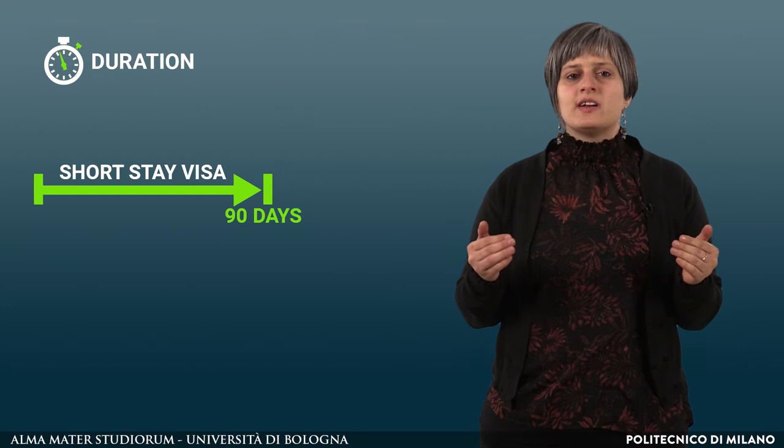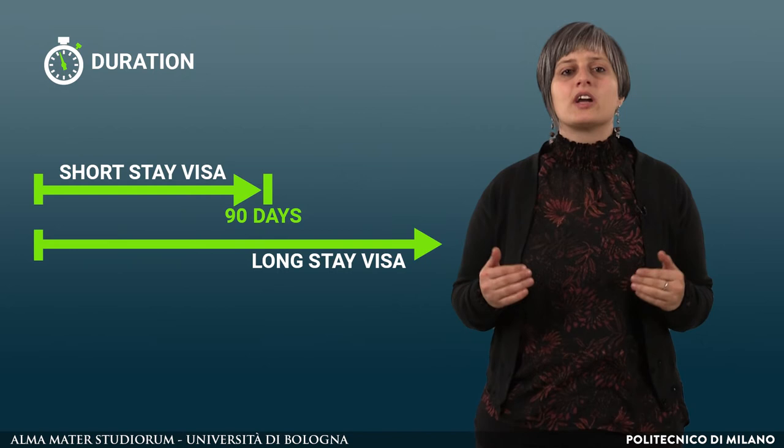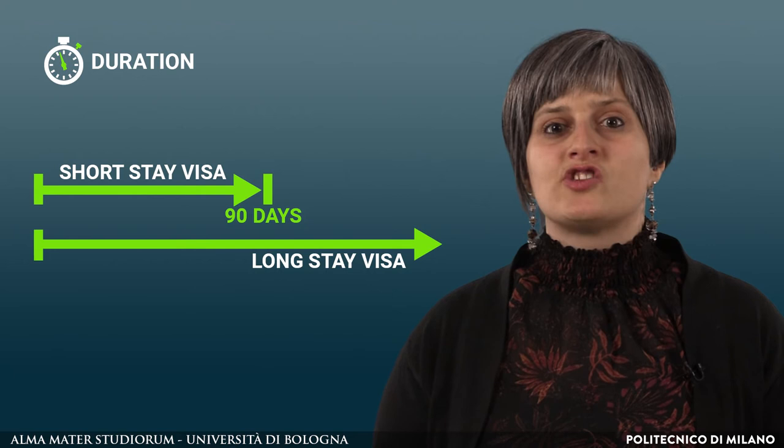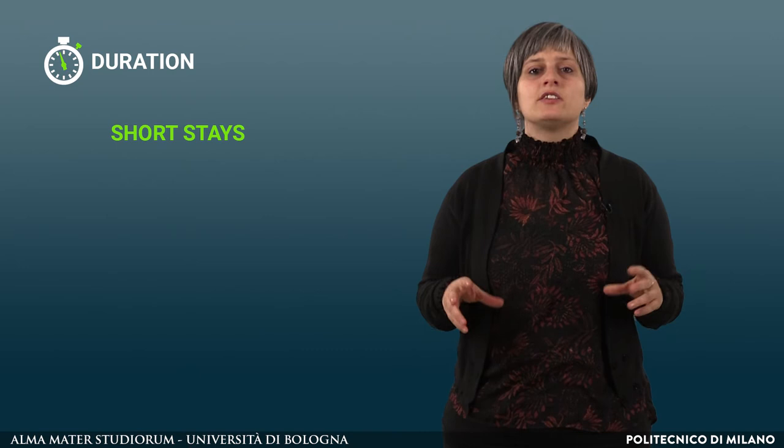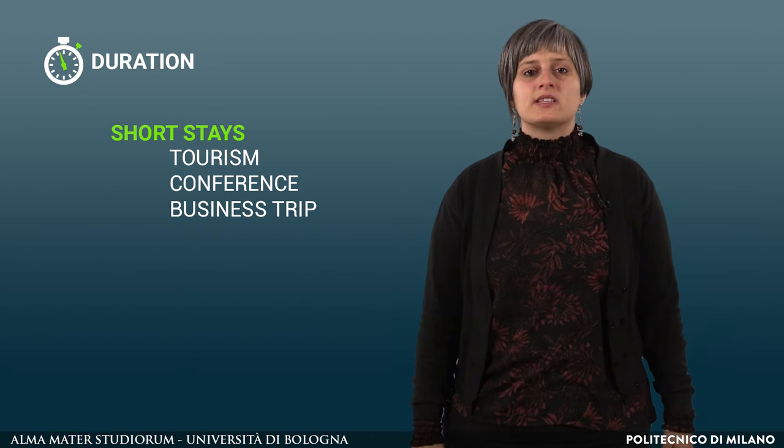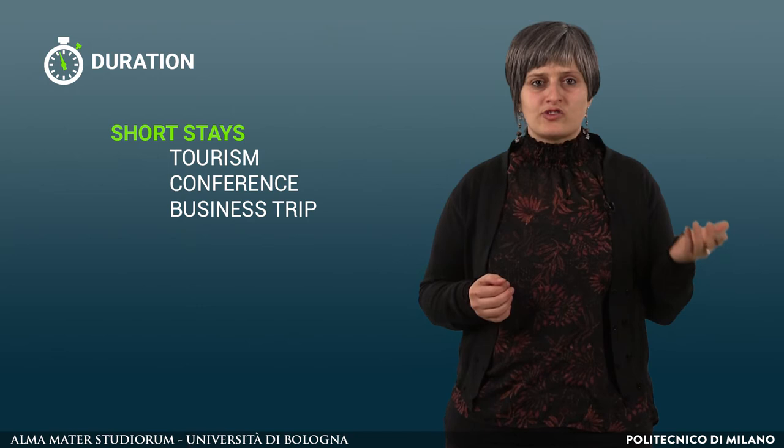The second variable to be considered is the duration of your trip. Countries usually distinguish between two types of visa in accordance with the trip's duration: short-stay visa, if your trip has a duration up to 90 days, or long-stay visa, if your trip is longer than 90 days. Some countries, such as Russia or some Asian nations, envisage shorter durations for short-stay visas, for instance only 30 or 60 days.